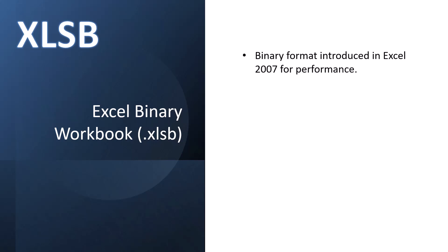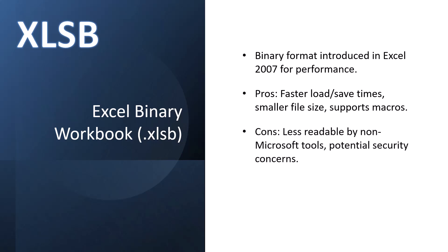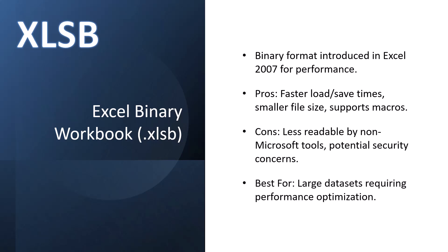The XLSB format is the Excel binary workbook, introduced in Excel 2007 for performance reasons. Like XLSX files, binary workbooks are stored in machine language — not the same language as XLS, but machine language nonetheless. The pros: faster load times, faster save times, smaller file sizes, and they support macros. If you're working with very large datasets that take a long time to load, saving them in XLSB format can dramatically reduce load times. The cons: they're less readable by non-Microsoft tools, and there are security concerns because you can't tell from the extension alone whether the file contains a macro. These are best for large datasets requiring performance optimization.